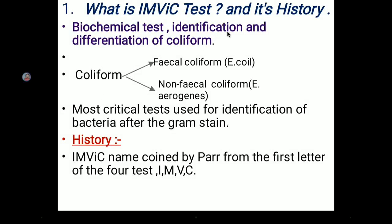The IMViC test is used for identification and differentiation of coliforms. Coliforms, also called enteric bacteria, are microorganisms that live in the colon region of the intestine. There are two groups: E. coli, called fecal coliform, and Enterobacter aerogenes, called non-fecal coliform. To differentiate these two organisms, we mainly use the IMViC test.